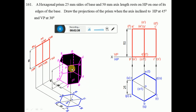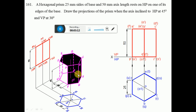From the front view, PQRSTU is at the bottom surface and ABCDEF is at a height of 50 mm. Measure a height of 50 mm and draw a horizontal line, marking the top surface ABCDEF. ABC is near to the observer, so A dash, B dash, C dash is visible. DEF is away from the observer, so D dash, E dash, F dash is invisible. O dash becomes invisible, hidden by the longer edge BQ. PQR is near to the observer, so P dash, Q dash, R dash is visible, and STU is invisible.